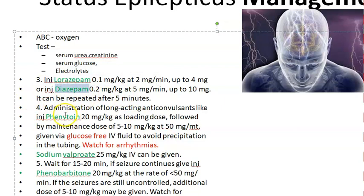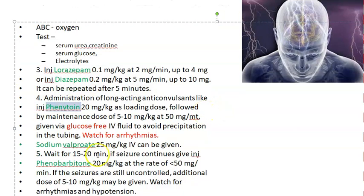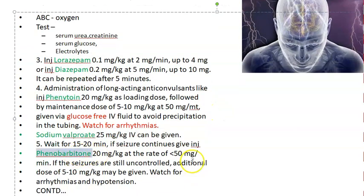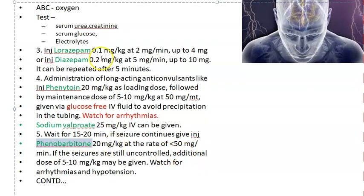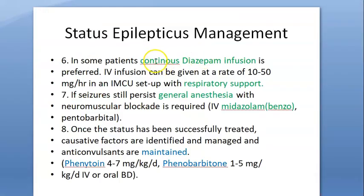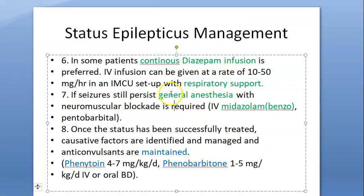Then escalate through: lorazepam, diazepam, phenytoin, sodium valproate, phenobarbiton. You give one after the other and keep checking. If it doesn't respond, give the next drug. After that, continuous diazepam infusion and respiratory support. Then they are talking about general anesthesia.